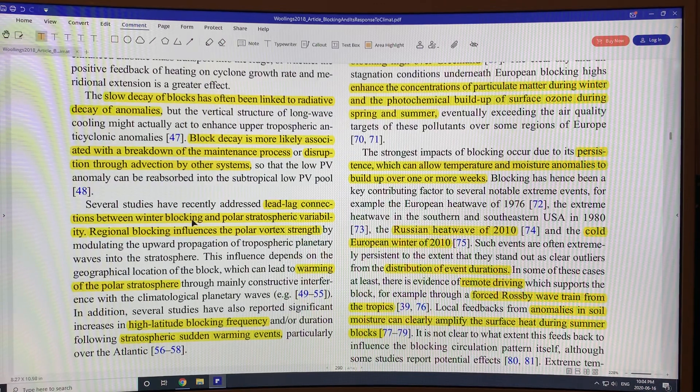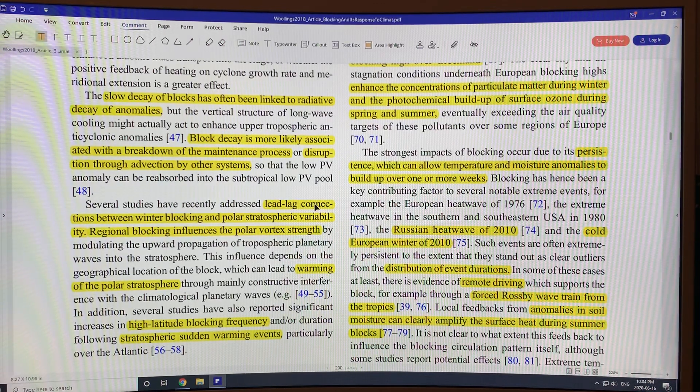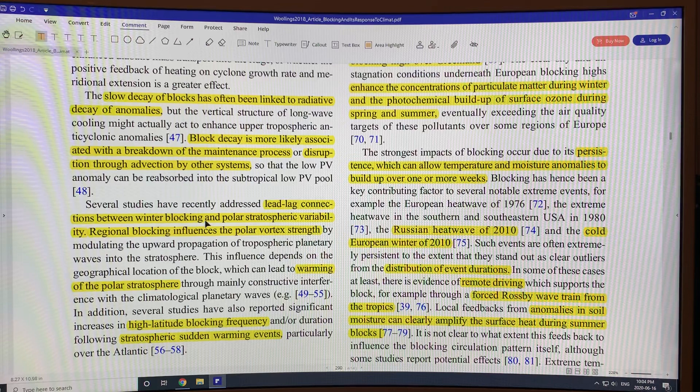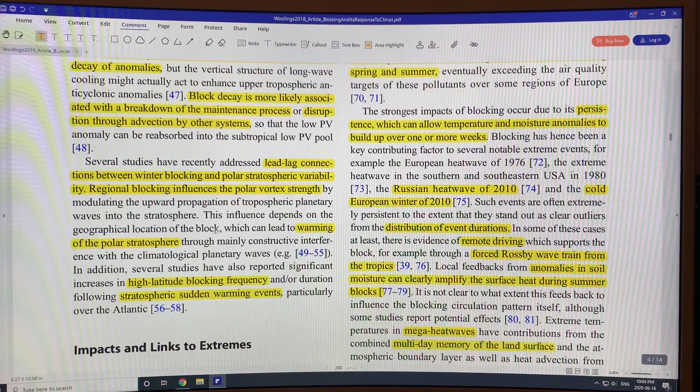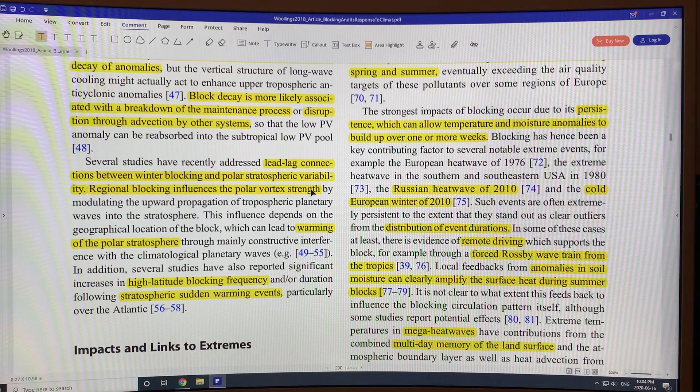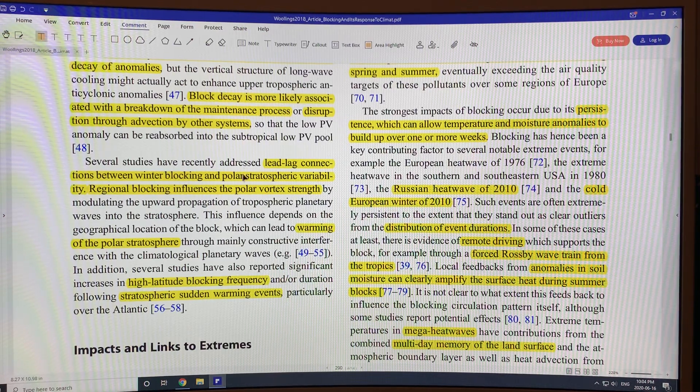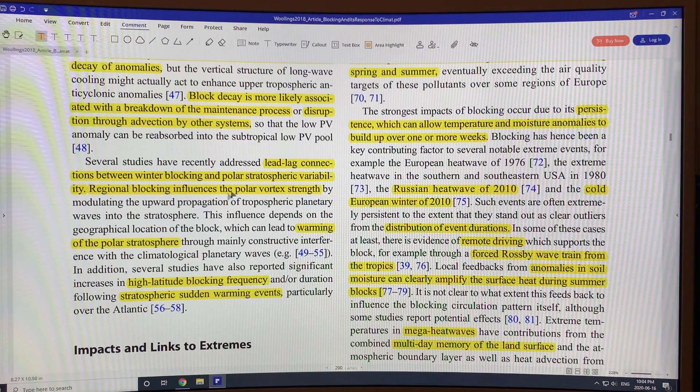There's also connections to the stratosphere. There's lead-lag connections between winter blocking and polar stratospheric variability. And this affects the polar vortex strength, and then the change of the polar vortex in the stratosphere can then feed back and affect the block.